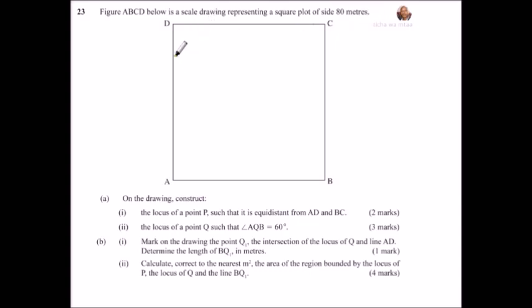So by scale drawing, it means from here it is drawn to scale. That is, from A to B it is 8 meters, maybe represented by 4 centimeters. B to C is 8 meters, represented by 4 centimeters. That is what we mean by scale drawing.